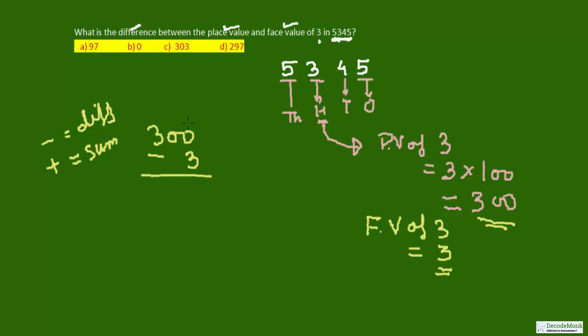So, 300 minus 3 will be equal to, again carrying over here, so 10 minus 3 will be equal to 7. This will be 9, and as 1 has been carried over here, 100 has been carried to the 10s and then to the 1s place, so we will be left with 2.